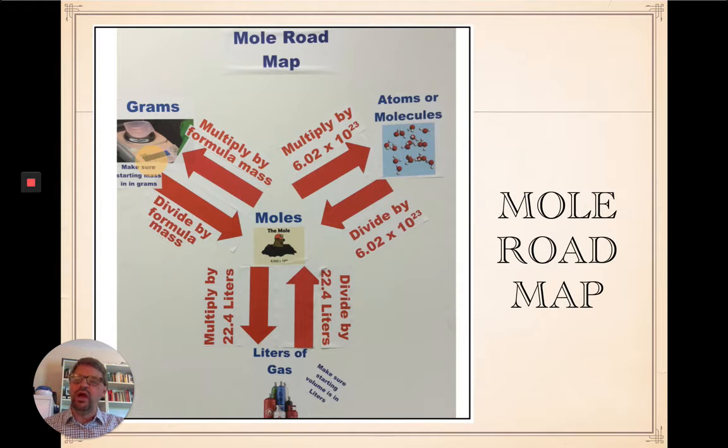You determine where you're starting at and you follow the arrows to where you're going to. So let's say I said we've got 50 grams of a compound. How many moles is that? Well, the arrow here is to go from grams to moles. Divide by formula mass. So whatever your gram mass is that you're starting with, you divide it by the formula mass of the compound. And that's going to tell you how many moles are present. That's how you use the mole roadmap.